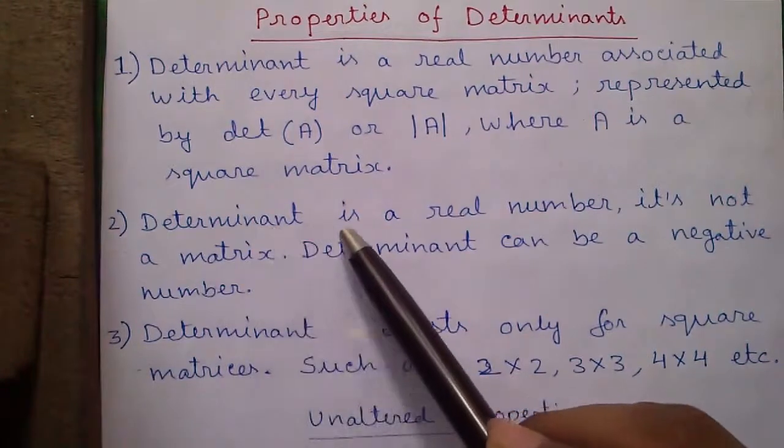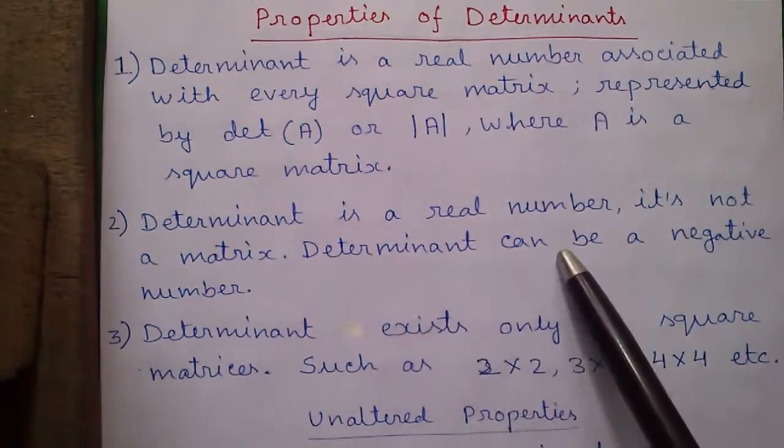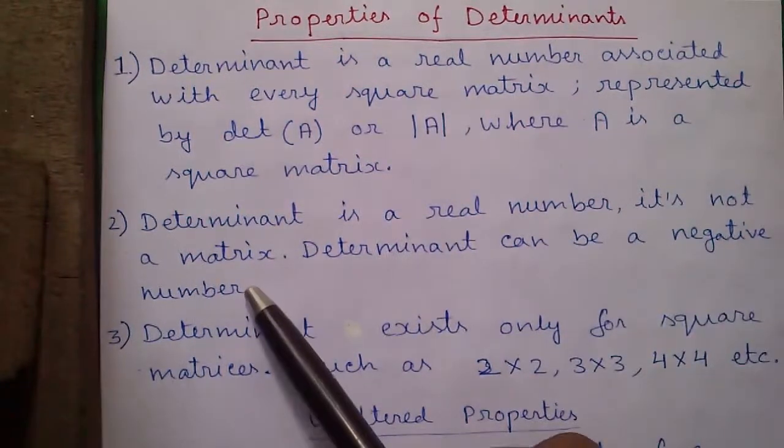Property number 2: determinant is a real number, it's not a matrix. Determinant can be negative or positive number.